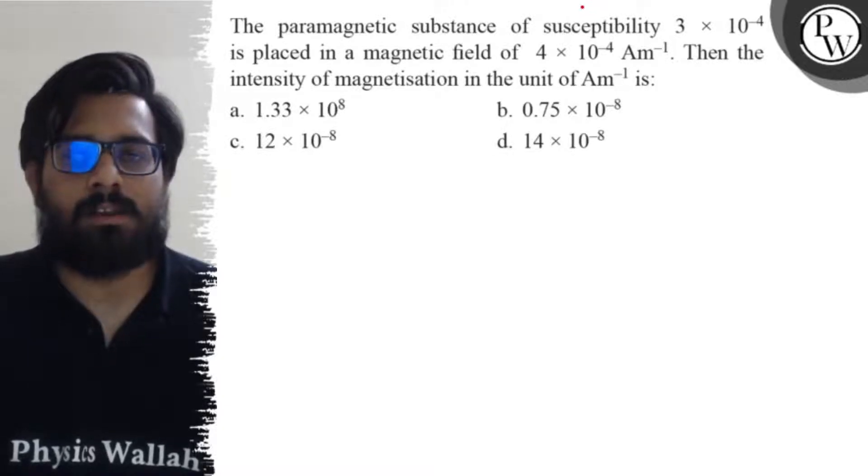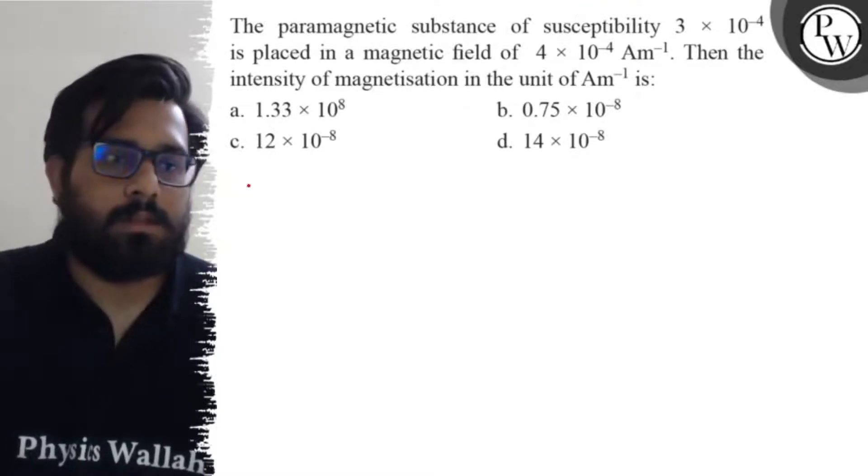The intensity of magnetization in the unit of ampere per meter is: (a) 1.33×10^8, (b) 0.75×10^-8, (c) 12×10^-8, and (d) 14×10^-8.